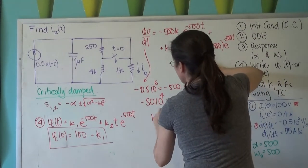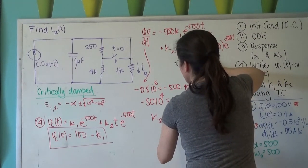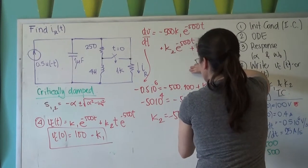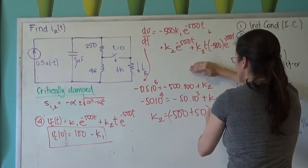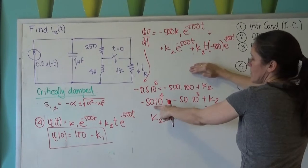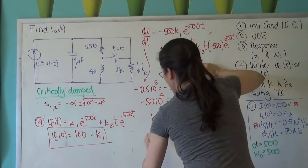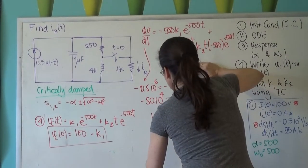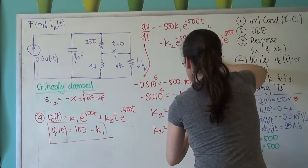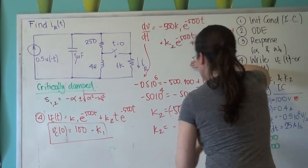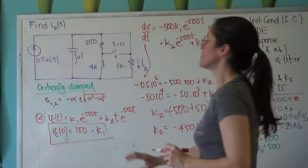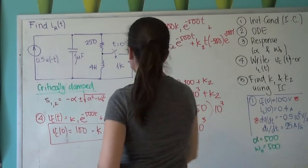So k2 equals minus 500×10³ plus 50×10³, giving k2 equals minus 450×10³. This completely determines my voltage on the capacitor.